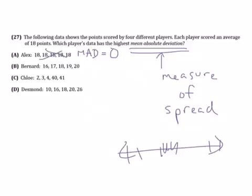We need to find which one is the most spread out away from 18. Bernard - even though not every data point is 18, all of his data is really close to 18. 16 is only two away, 17 is one away, 18 is the mean, 19 is one away, 20 is two away. So that's going to have a pretty small mean absolute deviation as well.